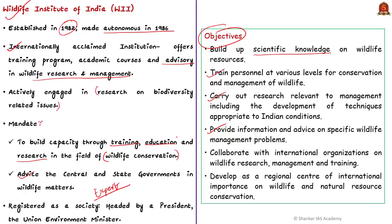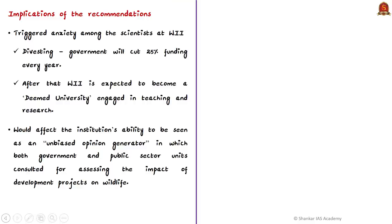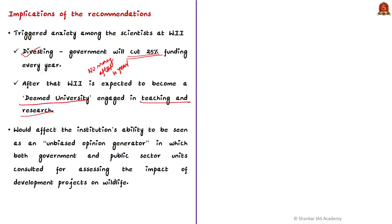Wildlife Institute of India is set up as a society headed by the Union Environment Minister under the Ministry of Environment, Forest and Climate Change. The Finance Ministry's recommendation has triggered anxiety among WII scientists because the divesting will happen through cutting WII's funding — the government will cut 25% funding every year, so after four years, it will provide no money to WII. After that, WII is expected to become a deemed university primarily engaged in teaching and research. But this would affect the institution's ability to be seen as an unbiased opinion generator consulted by both government and public sector units for assessing the impact of development projects on wildlife.